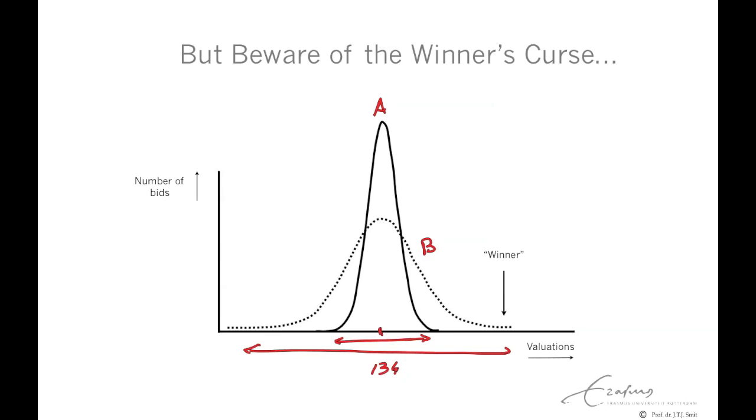So, now think about it for yourself. Which license will be more vulnerable to the winner's curse? Well, in this case, the auction mechanism will select the highest bidder. The average is not important, but only the highest bidder is important in case of an auction. License B is most vulnerable for the winner's curse, because the winner is the one who overestimated the value the most.